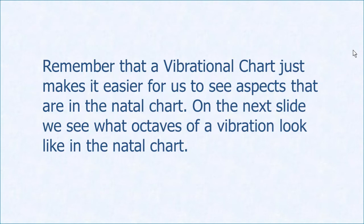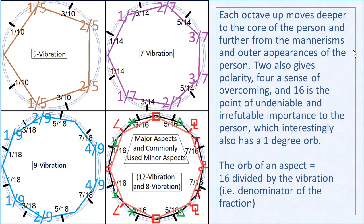A vibrational chart makes it easier to see aspects in the natal chart and to see related aspects. For example, a 15 vibration aspect in the natal chart — what does it look like in the five vibration chart? 15 is 5 times 3, so it's a trine. What does it mean? It means a trine in five — a soft kind of five. The vibrational chart is wonderful for visualizing.